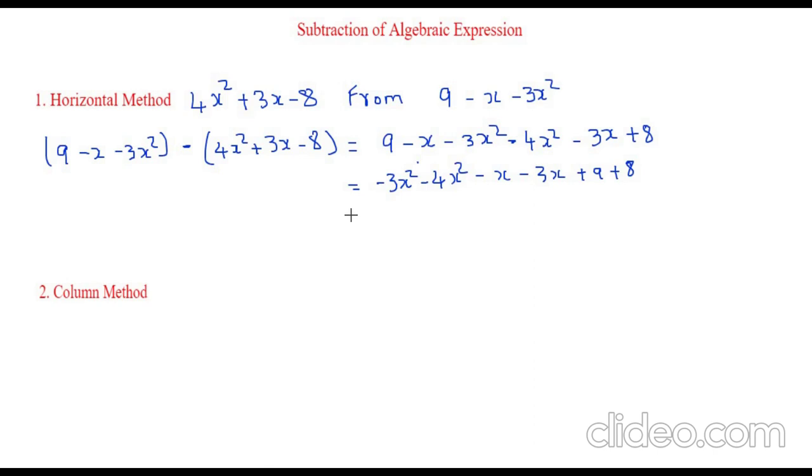So now let's add the like terms. Since minus 3 and minus 4 both are same signs, we have already learned this in the addition of integers. Same signs have to be added. So we have to put minus 7x square.